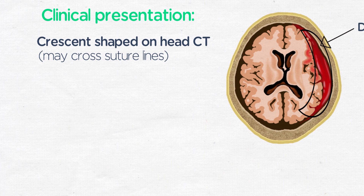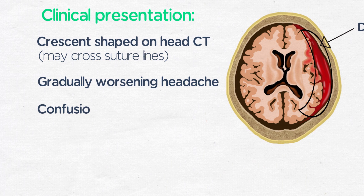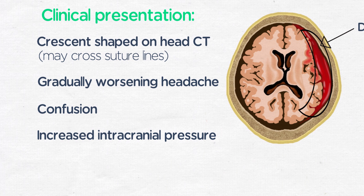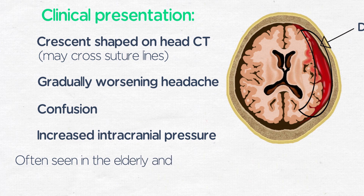Subdural hematomas are often associated with trauma as well in the acute setting. Clinically, they may manifest as gradually worsening headache and confusion. They may also increase intracranial pressure and may prompt neurosurgical intervention to avoid damage to the underlying brain. Chronic subdural hematomas are more commonly observed in the elderly and can often be managed without neurosurgical intervention.